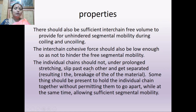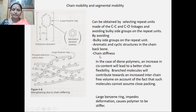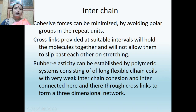Individual chains should not undergo prolonged stretching, slip past each other, and get separated, resulting in breakage of the material. Cross-links at suitable intervals hold individual chains together without permitting them to slip apart, while allowing sufficient segmental mobility. Chain mobility can be obtained by selecting repeat groups made up of C–C and C–O linkages and avoiding bulky side groups, aromatic and cyclic structures, and chain stiffness. In diene polymers, an increase in cis content leads to better chain flexibility. Branched molecules contribute to increased interchain free volume since such molecules cannot assume close packing. Interchain cohesive forces can be minimized by avoiding polar groups in the repeat units.